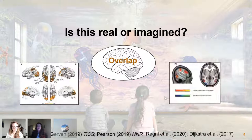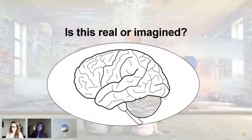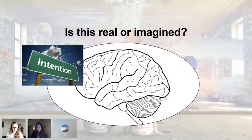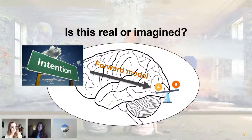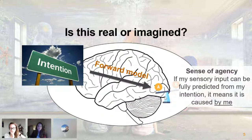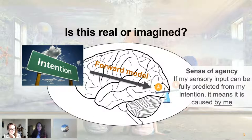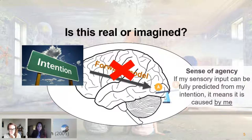So this poses a problem for perceptual reality monitoring. Which cues does the brain use to dissociate imagery from perception? In the motor control and action literature, the idea of intention is used to dissociate self-generated versus externally generated actions. An intention is coupled with a forward model which predicts the sensory consequences of the action. If the sensory input is fully predicted by this intention to move, then the brain can infer that this is self-generated. Could this intention-based forward modeling also be used to dissociate visual imagery from perception?